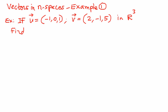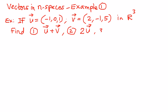Then we want to find the following things. First, what is the sum of vector u plus vector v? Second, what is the product of 2 times vector u? And third, what is vector v minus 2 times vector u? We also want to graph these and see how the combination and product of these vectors look.